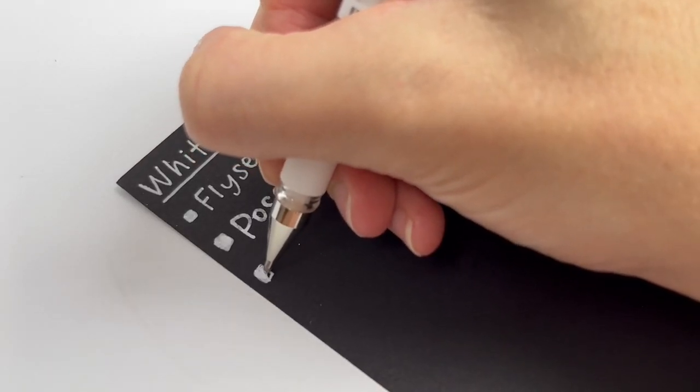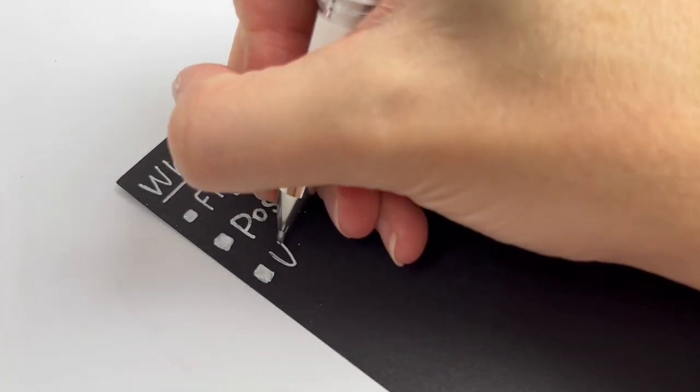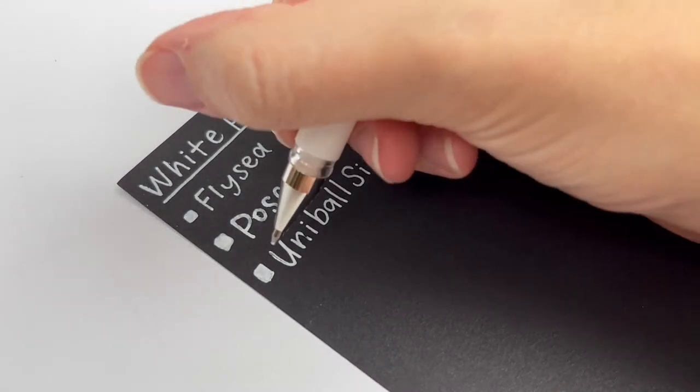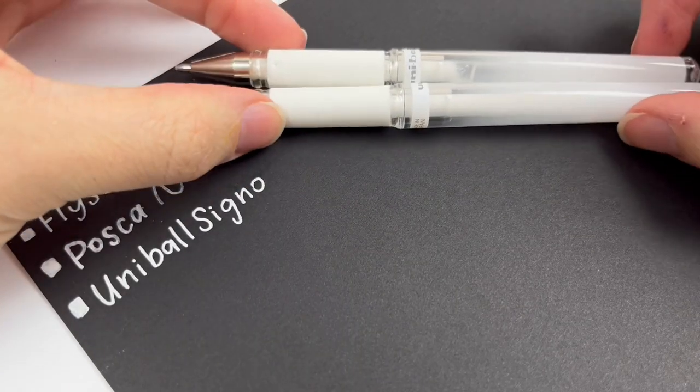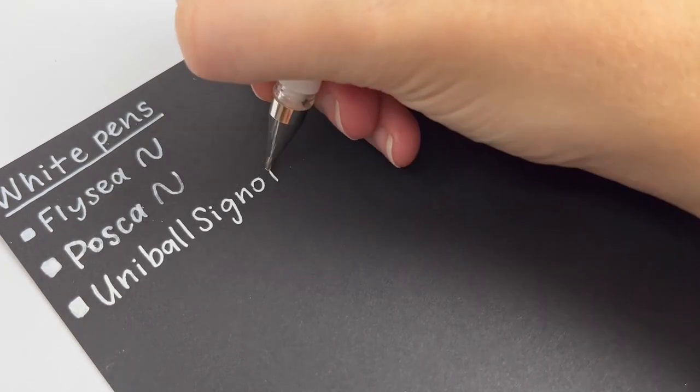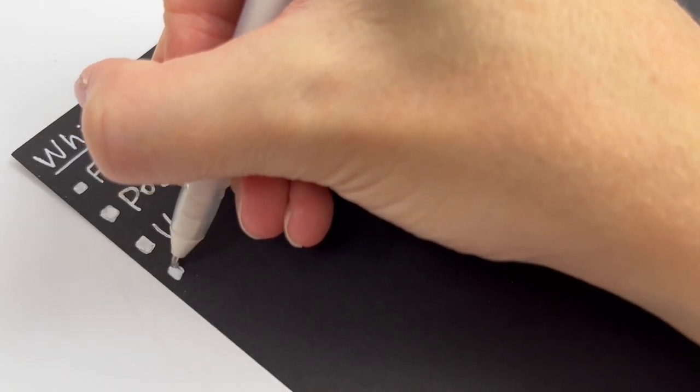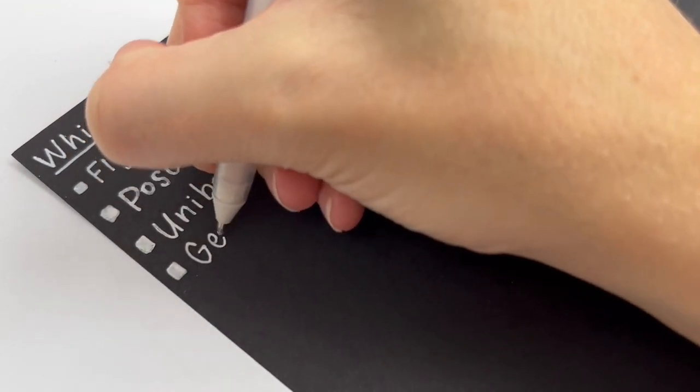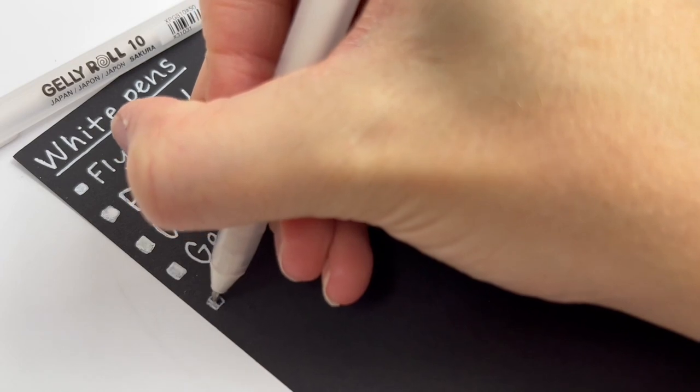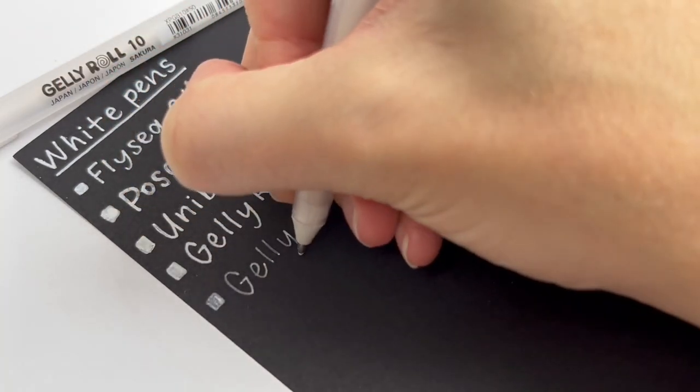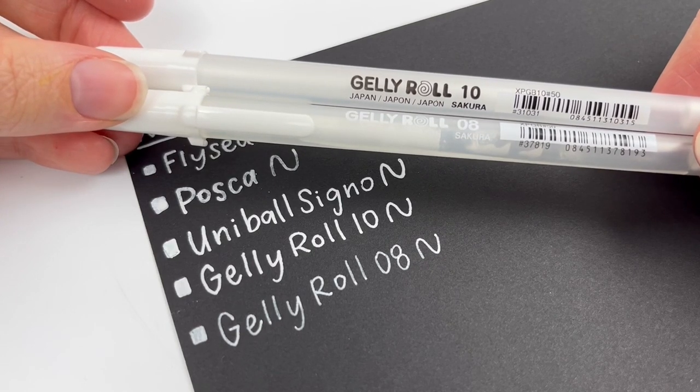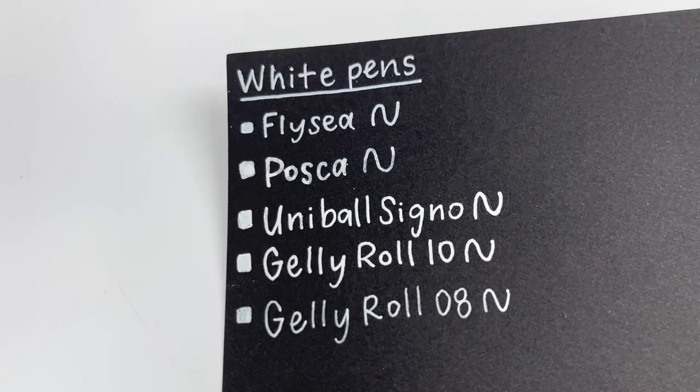Next, for gel pens, I have the Uniball Signo in white. And this one is my favorite white one, although I have to say that when the ink gets down, it's like halfway down. It kind of just stops working, and it's not smooth anymore, even though half the barrel is filled with ink. So just know if you are going to get it, they work really well, but they don't last long. Next, I have my Gelly Roll gel pens in white. I have two different sizes, and I've noticed that the bigger size, number 10, is better than the 08. It's just a little more opaque. So comparing them right here, it looks like the Uniball and the Gelly Roll 10 are pretty similar. I think I probably use my Flysea paint pen more than the gel pens, but of all the white gel pens that I've ever tried, these ones are my favorite.